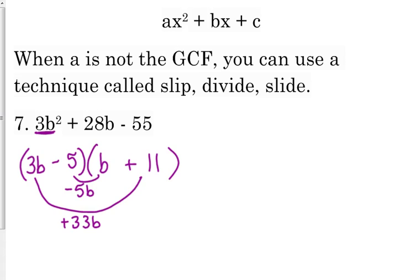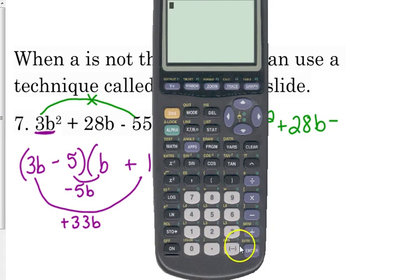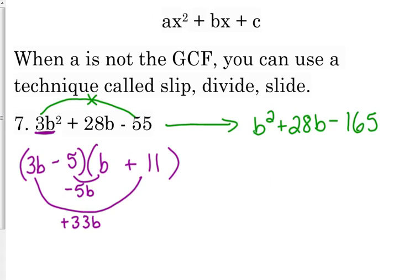Personally, I think that's quicker. I like it better. It's more mathematically sound. But you can use this technique, and it always works. What you do is the slip is you take the first coefficient, and you're going to multiply it. You're going to slip it to the end, and you're going to multiply. So our problem then becomes b² + 28b minus, I think that's 165, but let me check. 3 times 55. And it is negative. So negative 165.